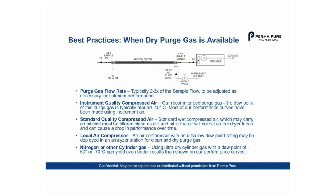I recommend going back to the first point: adjusting your purge gas flow rate. If you have an application where you don't need to get the sample as dry as the dryer can achieve, consider reducing your purge gas flow rate to save costs. We've recently found that you don't necessarily need an ultra-dry purge gas to get good performance. In some instances, a purge gas dried to minus 10 or minus 15 degrees C has proven effective enough to dry the sample to the level the customer needs.